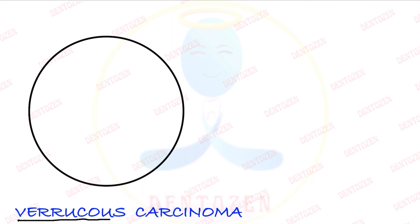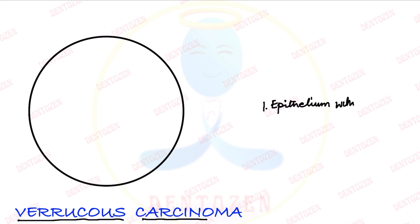The term 'verrucous' means something which is growing upwards with plant-like projections on the surface. In this, the epithelium is dysplastic but the basement membrane is intact — that is the difference from squamous carcinoma. The first point is epithelium with minimal dysplastic features.